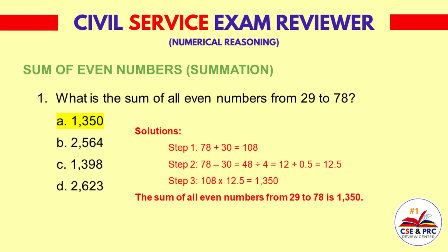Step 2: 78 minus 30 is equal to 48. 48 divided by 4 is equal to 12, plus 0.5 is equal to 12.5.